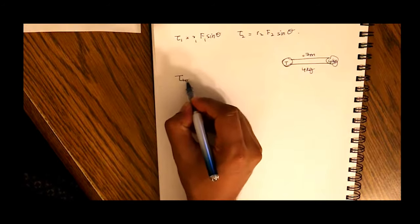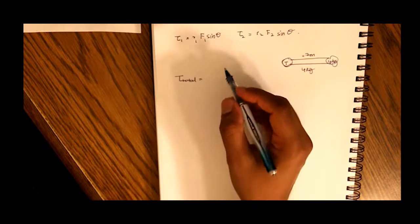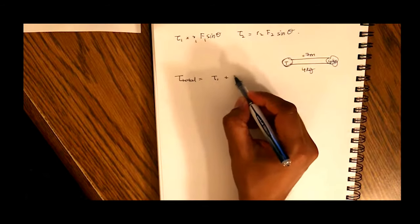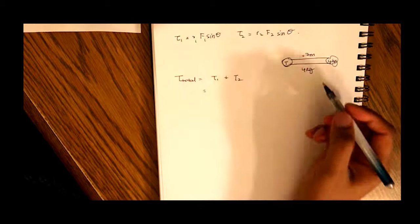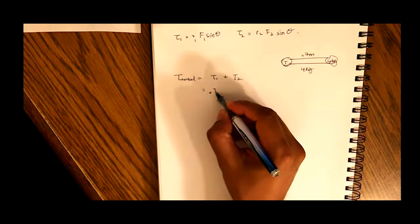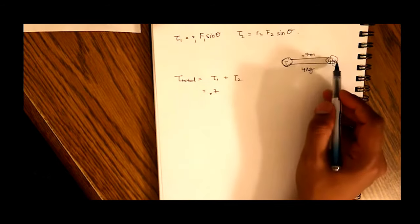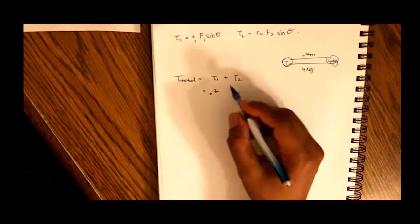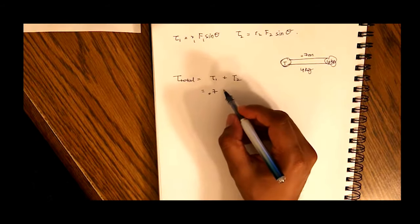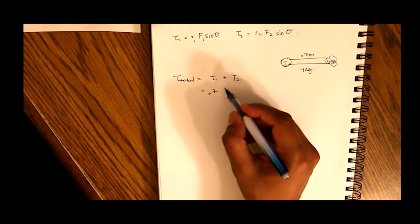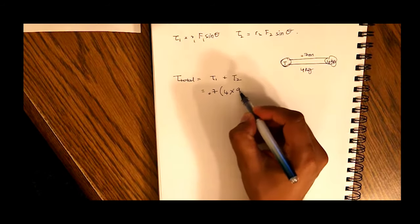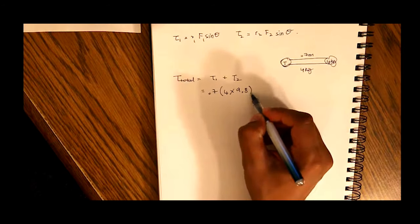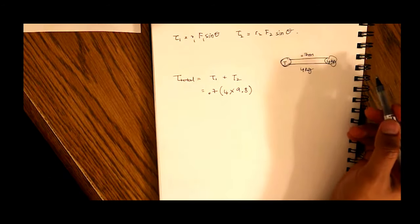So torque total equals torque 1 plus torque 2. So our torque 1 is R1, F1 sine theta. That's 0.7. And our F is our mass times our acceleration due to gravity of the ball. So F is mass times acceleration. So that will be 4 times 9.8. Sine theta is just sine of 90, which is 1.